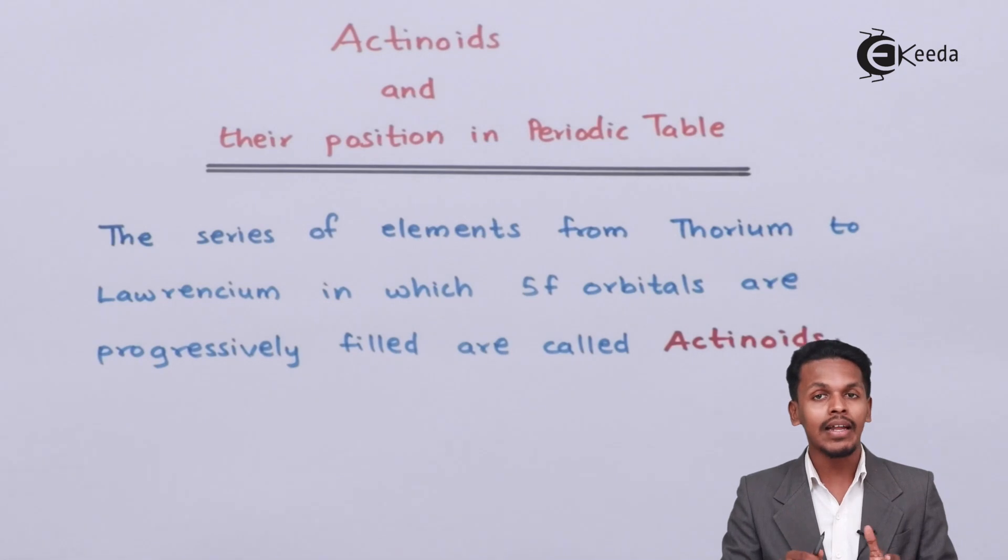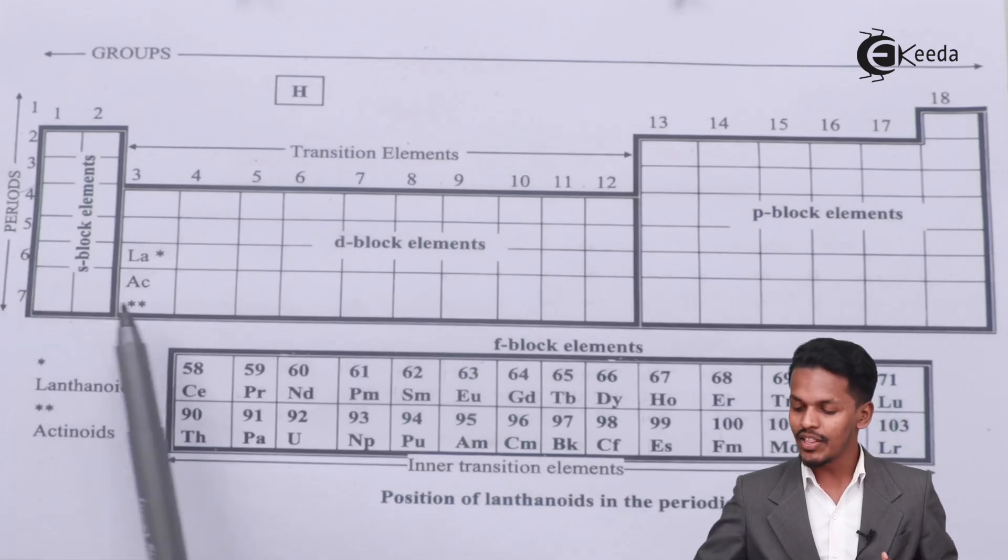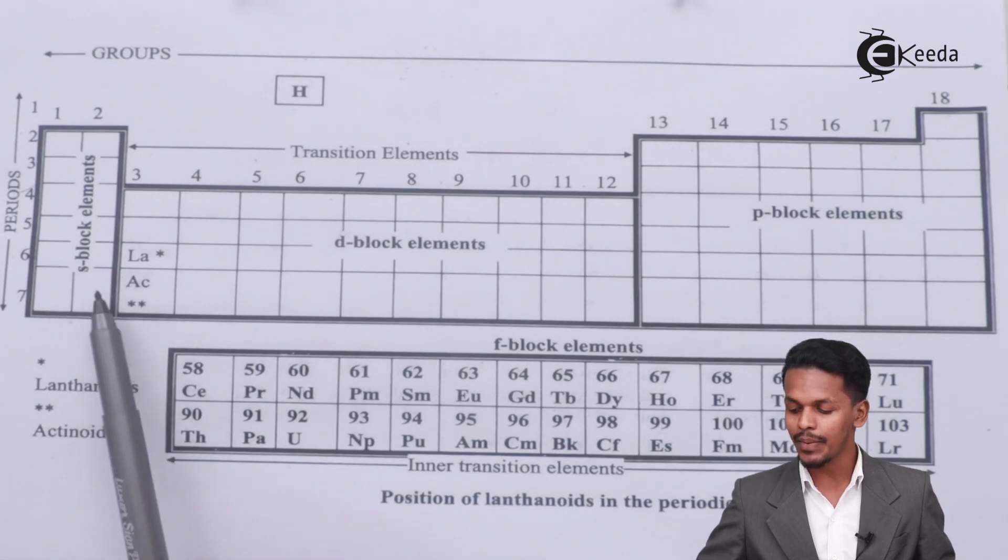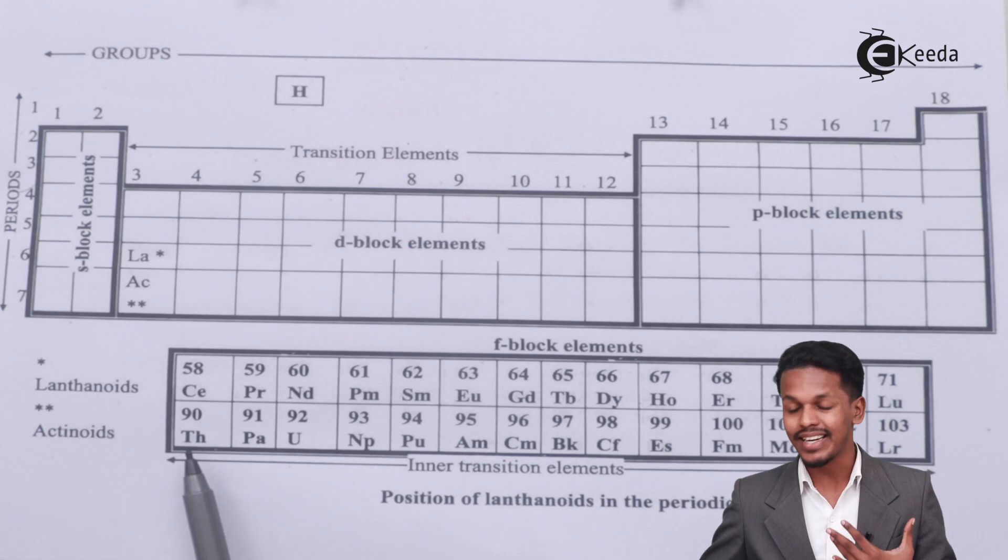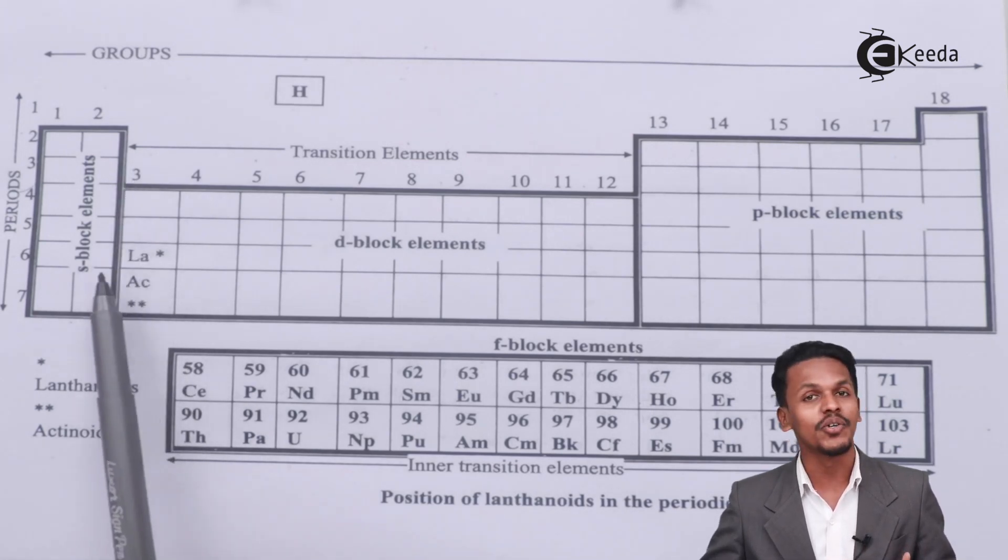Let me discuss the position of these elements. The position is in the 7th period and the 3rd group. Actinium is present in the 7th period and the 3rd group, but the actinoids start from thorium and end with laurencium. All these elements are present in the 7th period and the 3rd group.